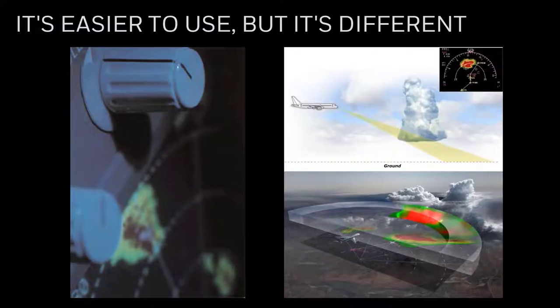We'll start with a brief introduction comparing the RDR 4000 to conventional radar, look at the heart of the system — the 3D volumetric buffer — and the operational modes it provides, including predictive wind shear. We'll then look at the hazard display features and how to determine the options installed on your aircraft, and finally pull it all together with operational examples and in-service experience.